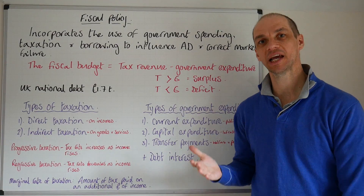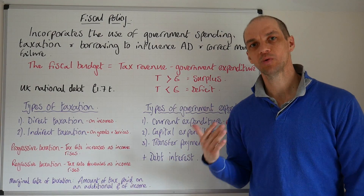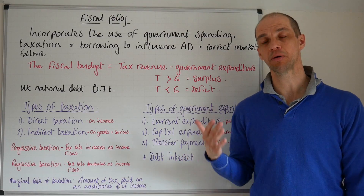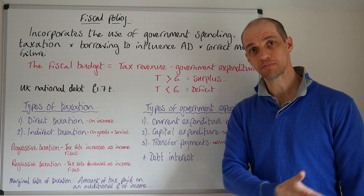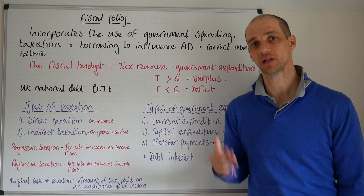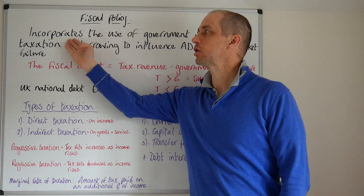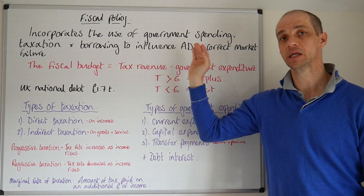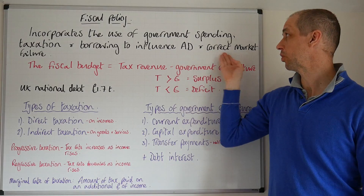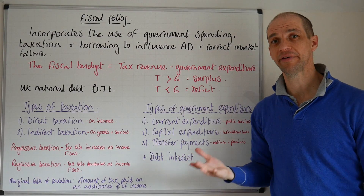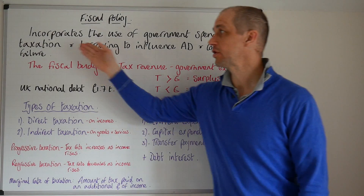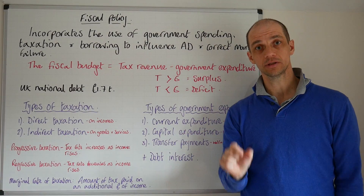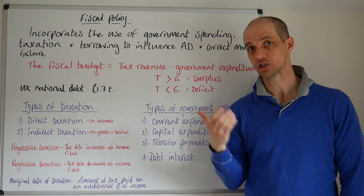Hi everyone, so let's now take a look at fiscal policy. This is a crucial macroeconomic policy management tool used by governments across the world. It incorporates the use of government expenditure, taxation and borrowing to influence aggregate demand and correct market failures within an economy. Those market failures may consist of missing markets where you have pure public goods such as street lighting,